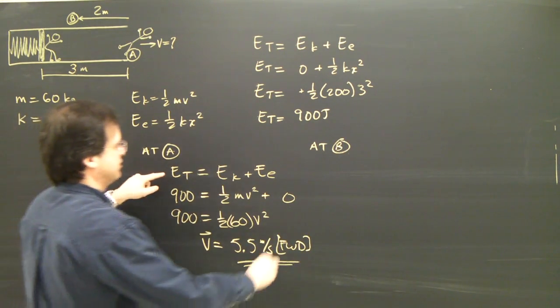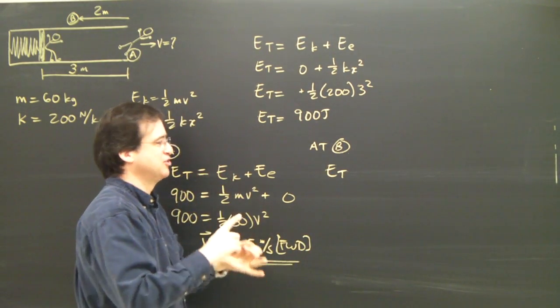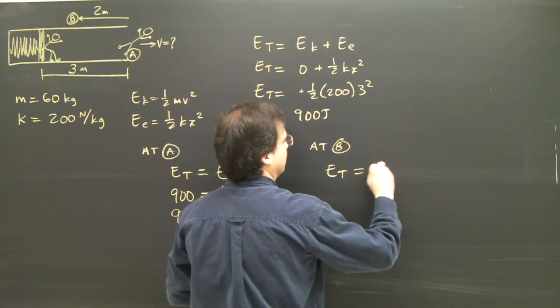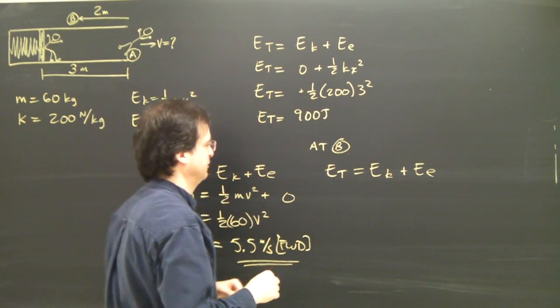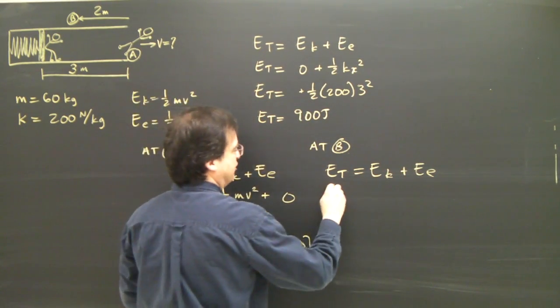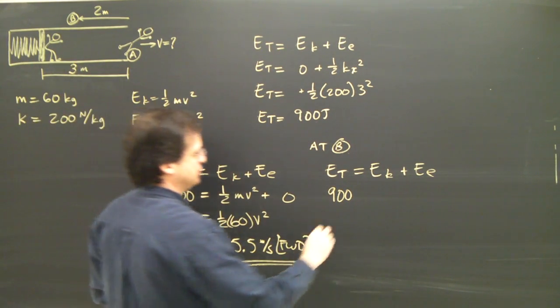At B I have the same formula. At B I'm still dealing with elastic energy and kinetic energy. So my total energy is made up of those two. Kinetic plus elastic. I know what the total is. It never changes. The total here is 900 joules. The total here is 900 joules. And the total here is 900 joules.